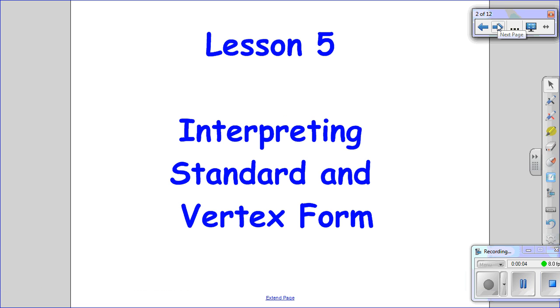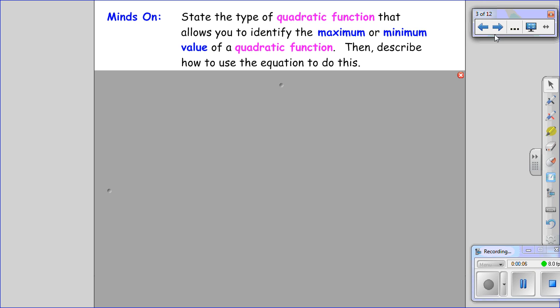Interpreting standard and vertex form. First, we want to consider the type of quadratic function that allows us to identify the maximum and minimum value, and how we use the equation to do this.